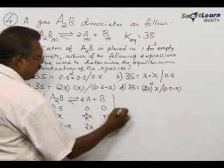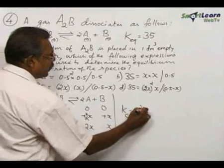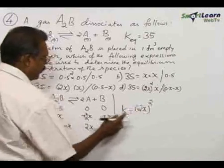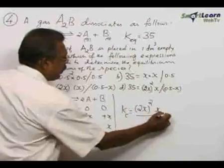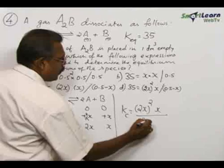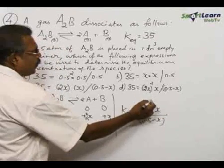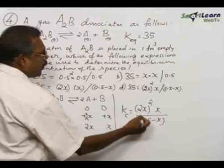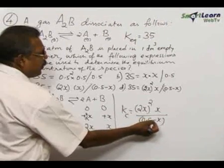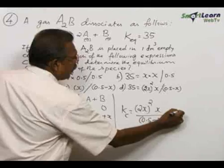Kc is equal to 2x the whole squared because of the number of moles, and x, divided by the active mass of the reactant, that is 0.5 minus x. So 2x the whole squared into x divided by 0.5 minus x, and this is equal to 35 as per the problem.